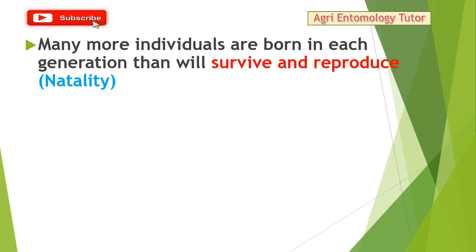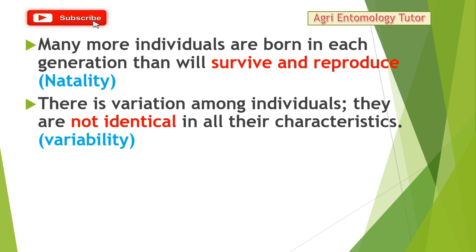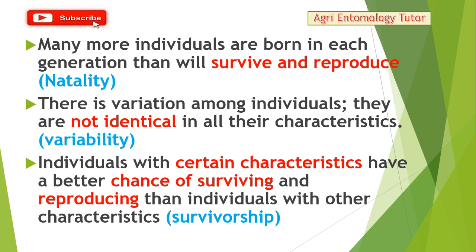Those five premises are: natality, variability, survivorship, heritability, and time. Natality: many more individuals are born in each generation than will survive and reproduce. Variability: variation is created among individuals for certain characteristics. Survivorship: variability for certain characteristics may help an individual have a better chance of surviving and reproducing than individuals with other characteristics.